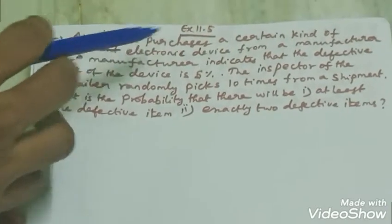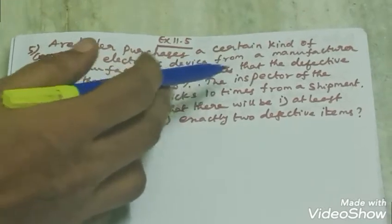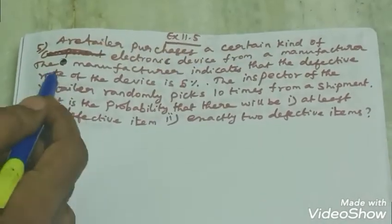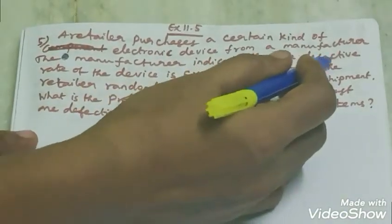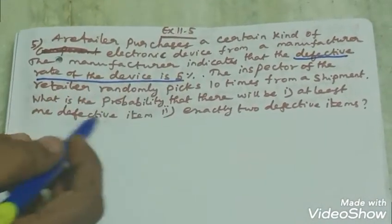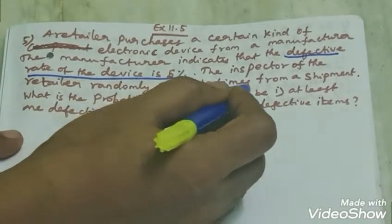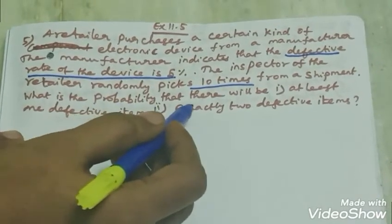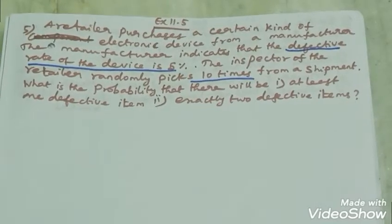Good morning students. Exercise 11.5. A retailer purchases a certain kind of electronic device from a manufacturer. The manufacturer indicates that the defective rate of the device is 5%. The inspector of the retailer randomly selects 10 items from the shipment. What is the probability that there will be at least one defective item, and exactly two defective items?